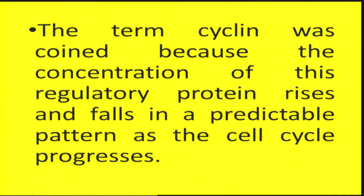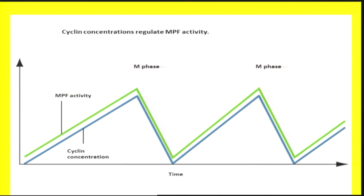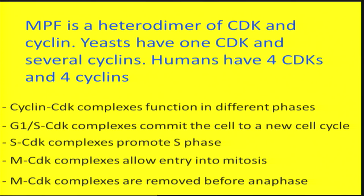The term cyclin was coined because the concentration of this regulatory protein rises and falls in a predictable manner as the cell cycle progresses. As cyclin level increases, the cell progresses from G1 to M phase. When cyclin concentration is high, it correlates with high MPF activity. When cyclins are degraded by proteolysis, the cell would move into or remain in the G0 phase. When cyclin concentration rises again, MPF activity rises and the cell transits from one stage to the next.